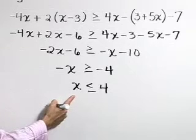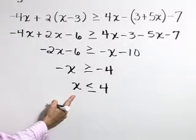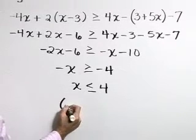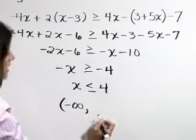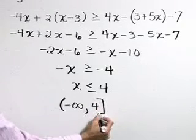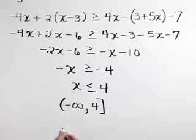So we have our solution in inequality form. Let's also write it in interval notation as the interval from negative infinity up to and including 4. The bracket indicates inclusion of the number 4.